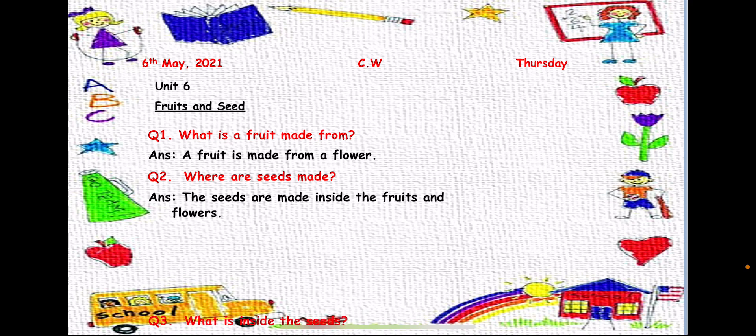Question 3: What is inside the seeds? So what do you think? What is inside the seed? When you put the seed into the soil, the seeds sprout and what comes out? A baby plant. So we will write the answer: Inside the seeds are seed leaves and a baby plant. And then this baby plant comes out and grows into a big plant.